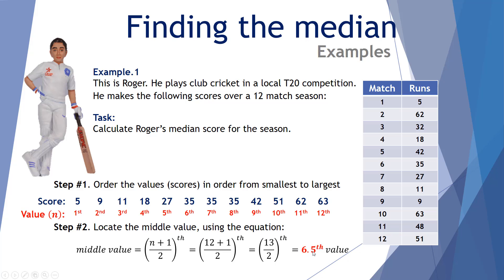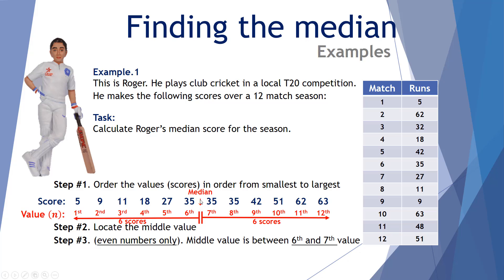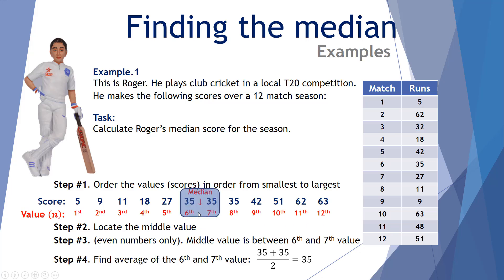So it's our 6.5th value which will be our median. We've got an even number of scores, so we're not going to find an actual number right in the middle — it's going to be between the 6th and the 7th score when ordered from lowest to highest. That provides 6 scores below our median and a further 6 scores above. To find the actual median of the 6.5th score, we take the average of the 6th and the 7th score.